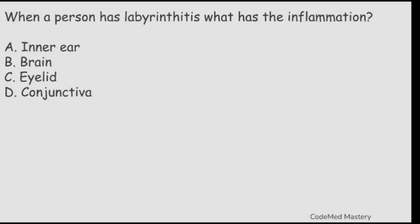Next question: when a person has labyrinthitis, what has the inflammation? Option A: inner ear. Option B: brain. Option C: eyelid. Option D: conjunctiva. The right answer is option A, inner ear. Labyrinthitis means swelling of the part of the inner ear called the labyrinth.